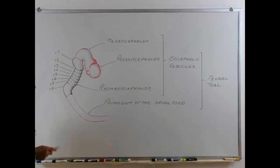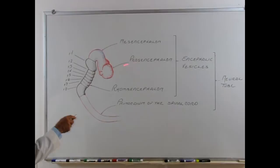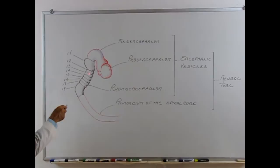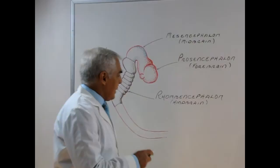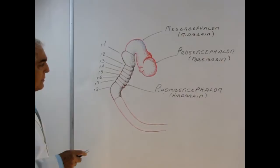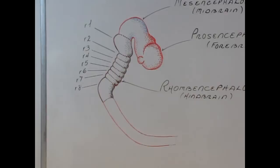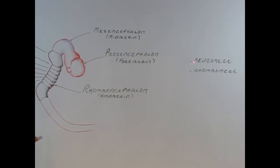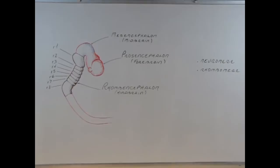The encephalic vesicles include the prosencephalum, the mesencephalum, and the rhombencephalum — which we now know is composed of eight neuromeres, also called segments or metameres. In the hindbrain, or rhombencephalum, there are eight segments named neuromeres, and these neuromeres are often called rhombomeres.